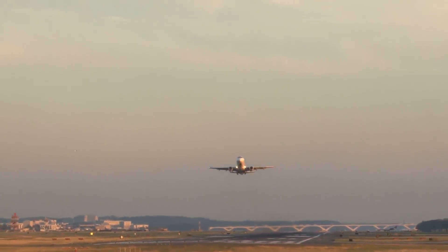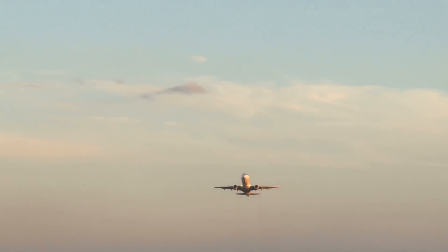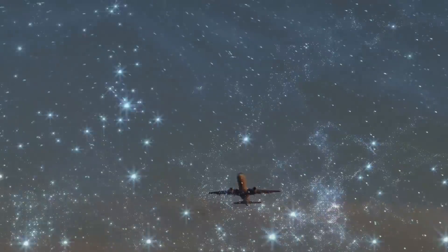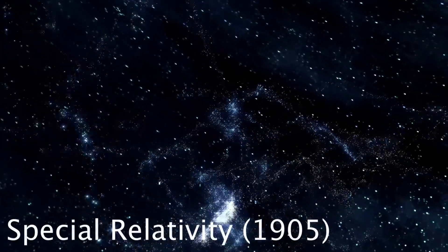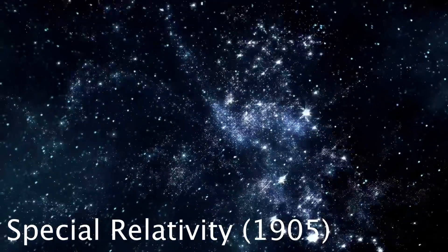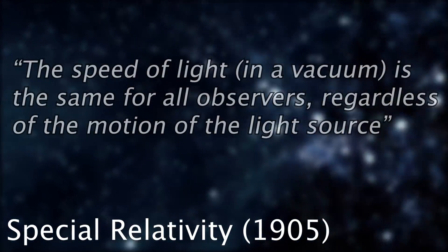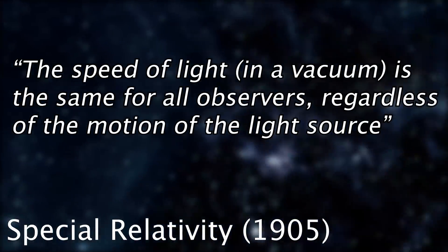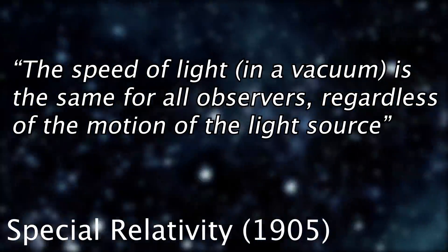The first that really popped up in this century dealt with the very fast, which brings us to Einstein's theory of special relativity. Einstein theorized something that is extremely counterintuitive to what we would think about ordinary, everyday objects. He said that the speed of light in a vacuum is the same for all observers, regardless of the motion of a light source.